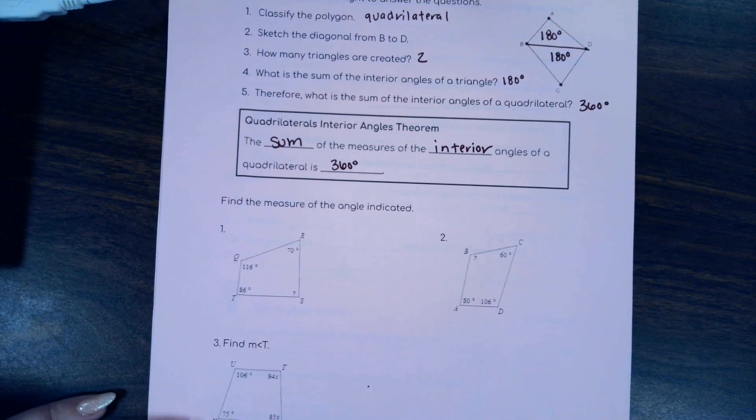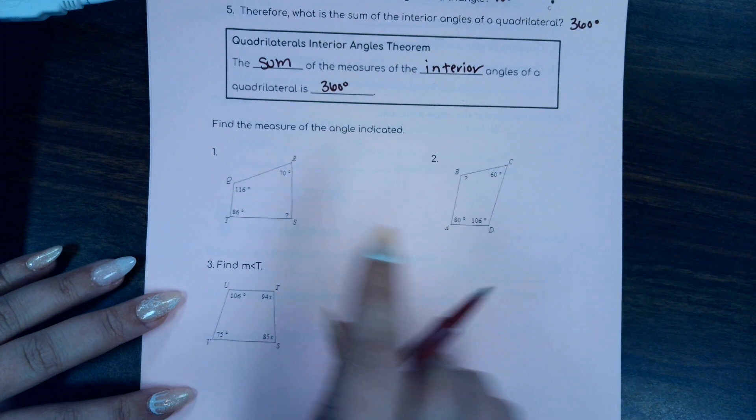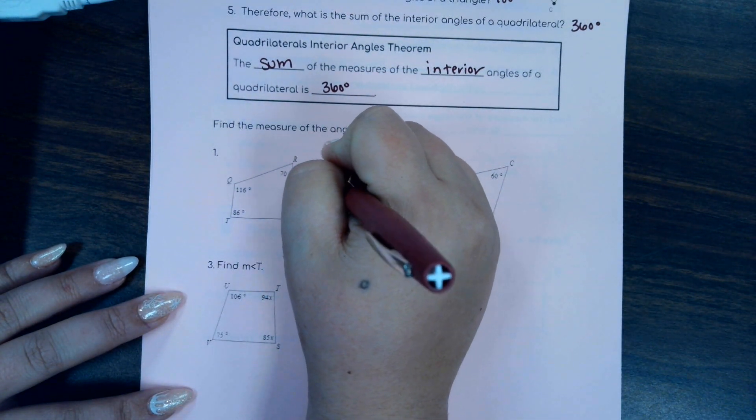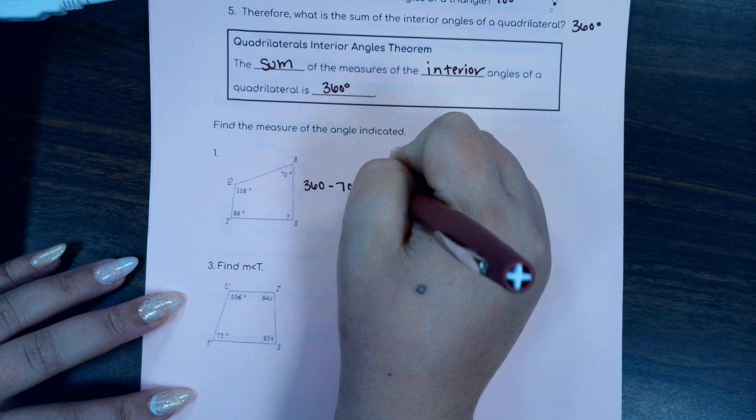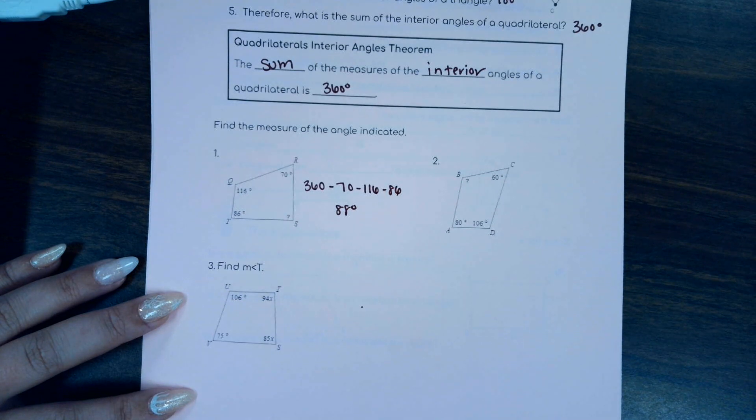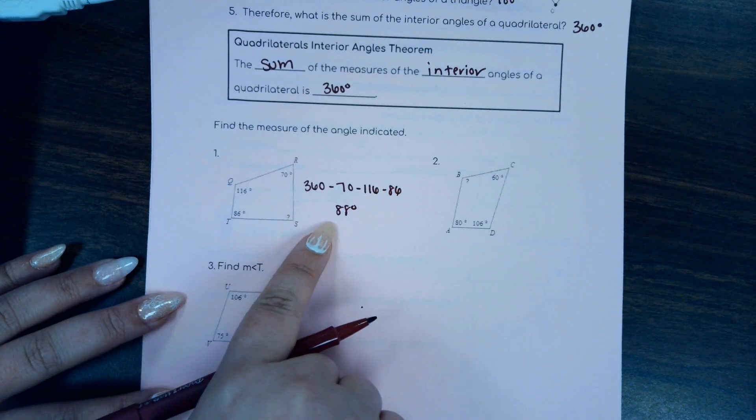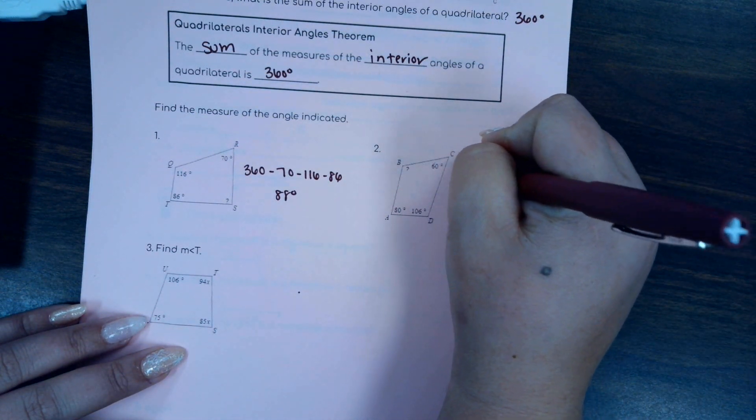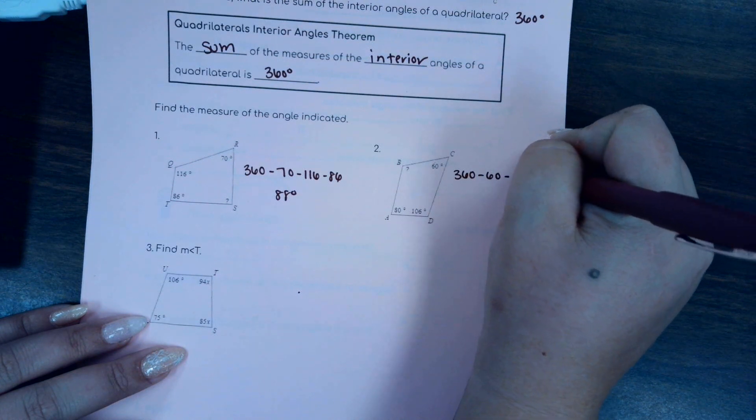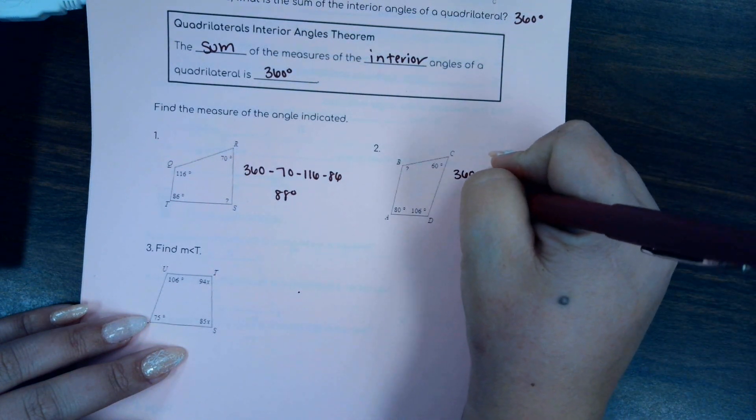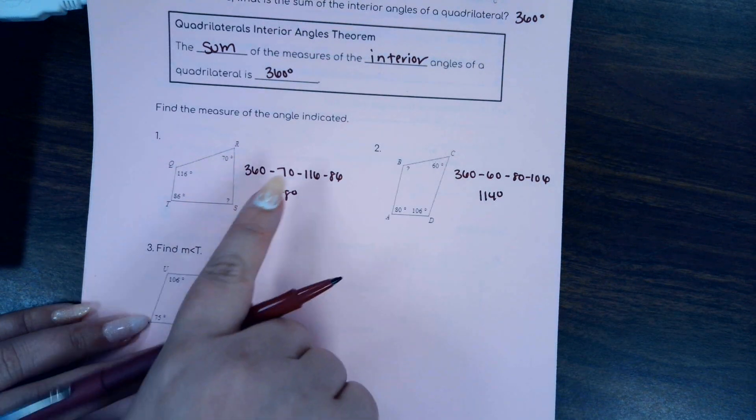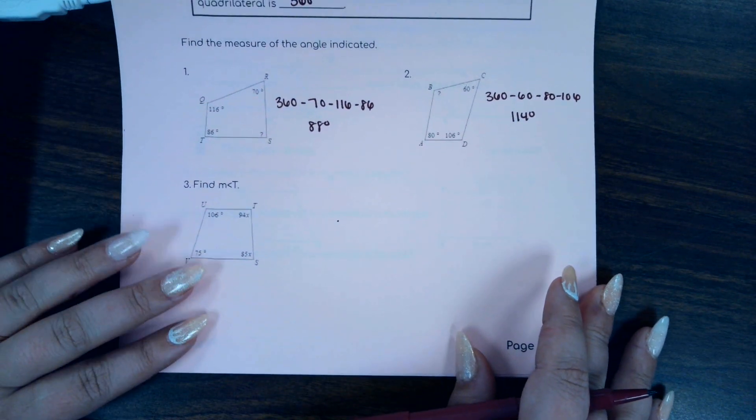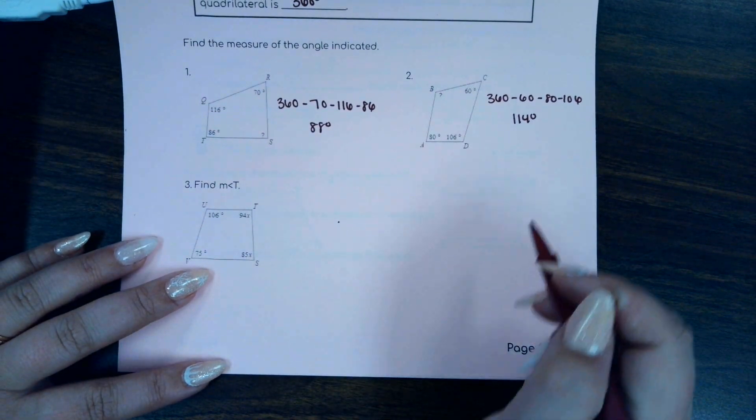All right, let's put that into practice. So number one, we know three angles and we're looking for the fourth. So if we just take 360 and subtract the three angles that we know, that means the measure of angle S is 88 degrees. We can do the same thing in number two. Take 360, subtract all three angles that we know, and you'll get 114 degrees. So that means the measure of angle B is 114 degrees. Now those are pretty basic. We're going to use algebra a little more than just adding and subtracting.